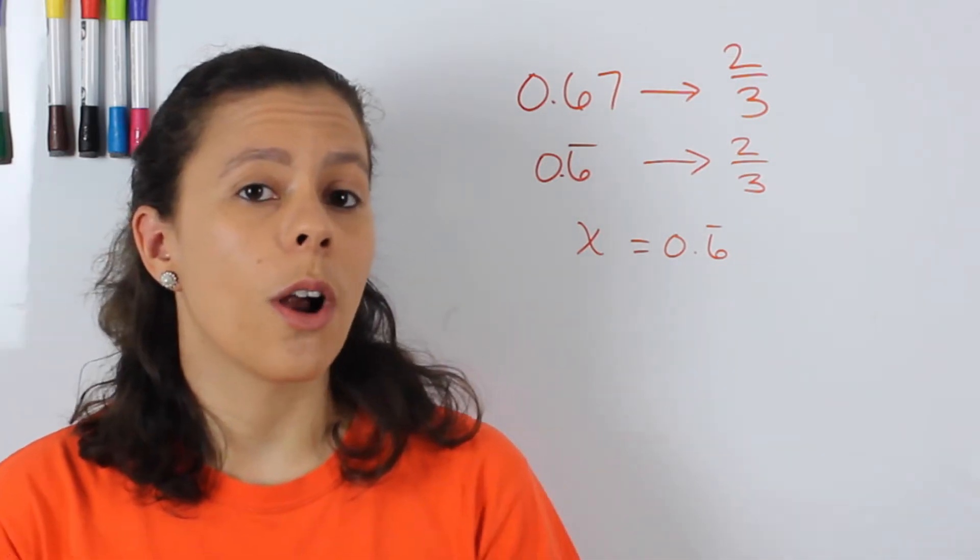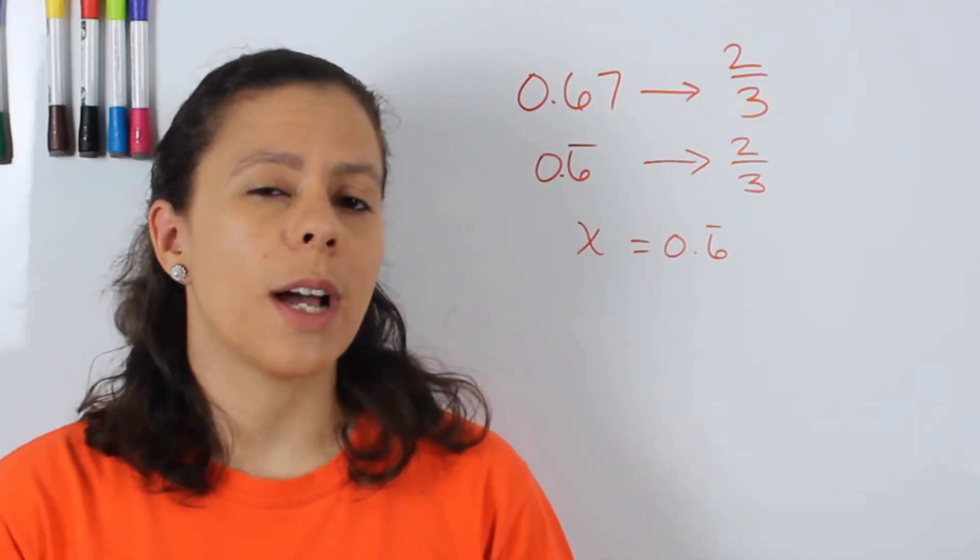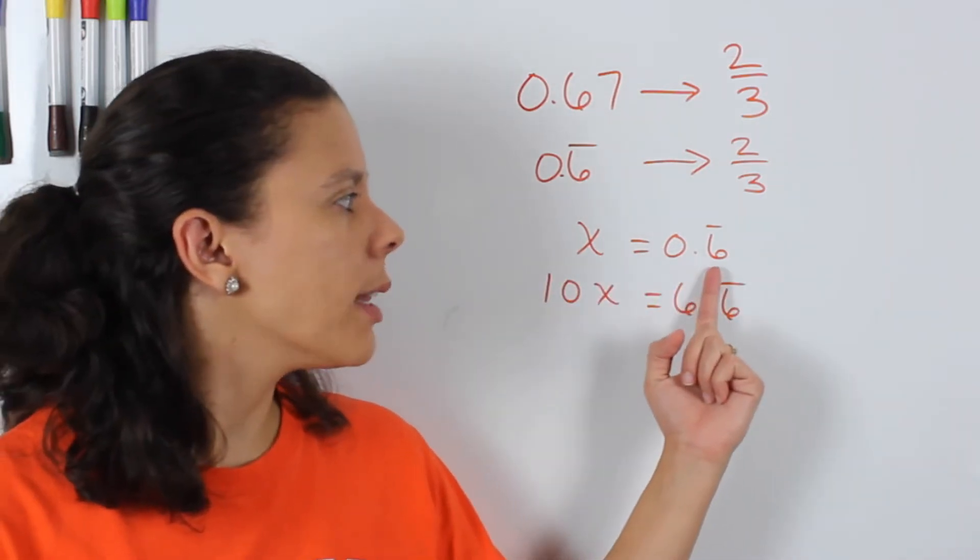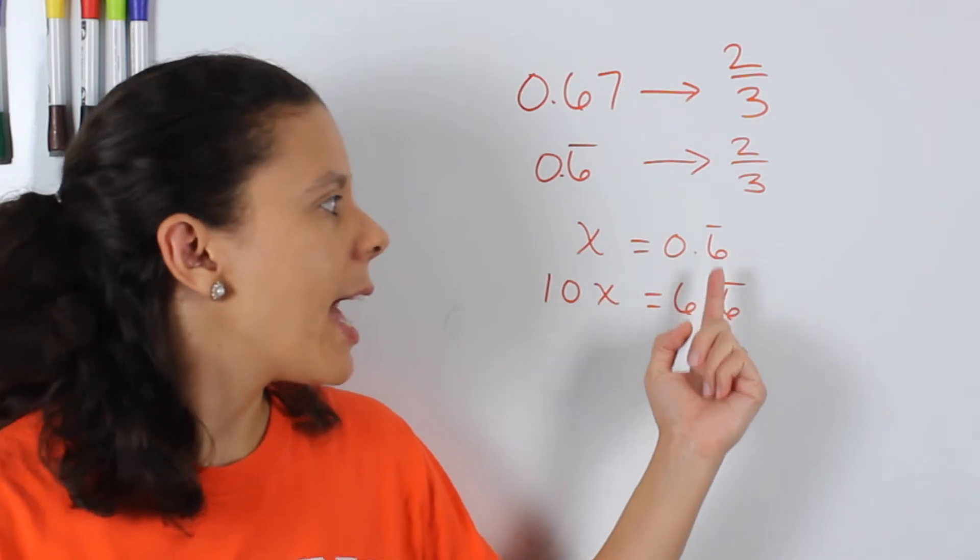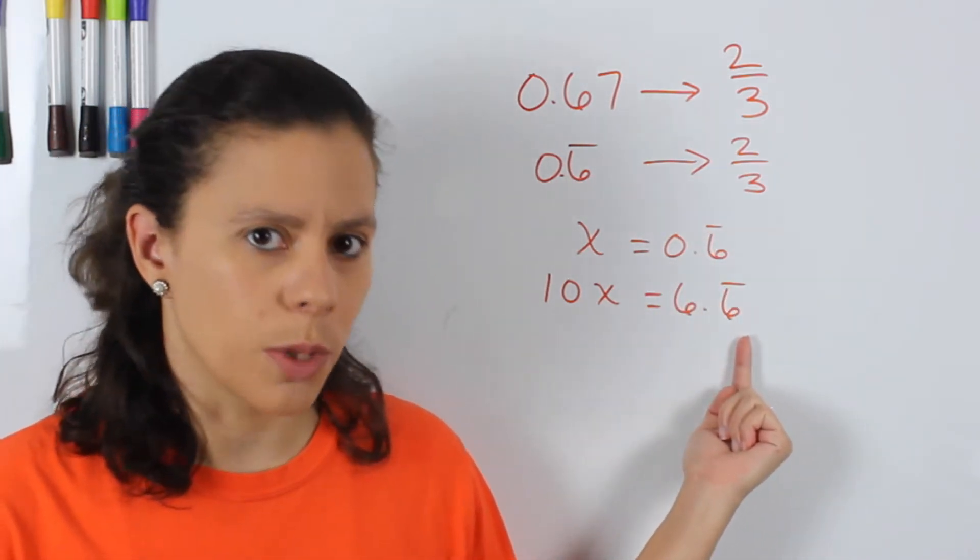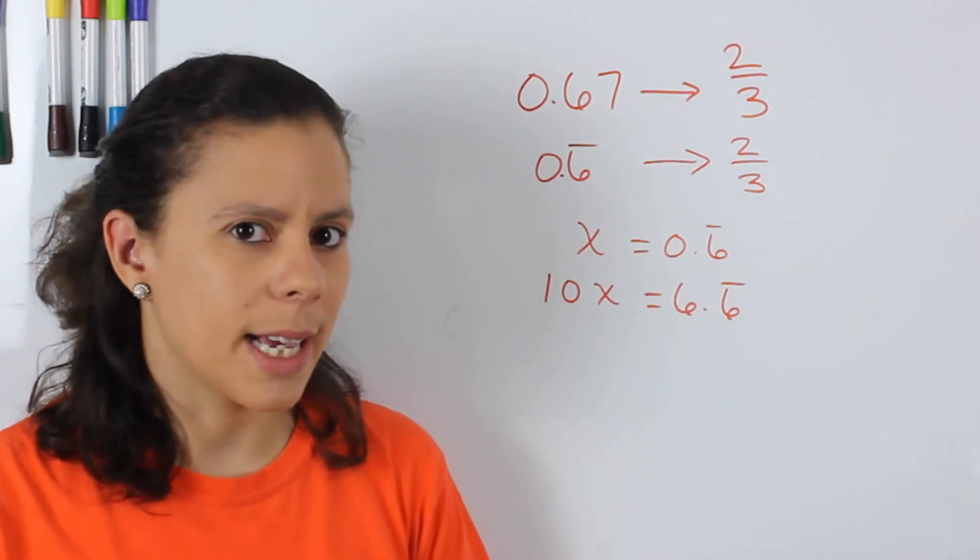Now in order to solve for x, what we have to do is we have to multiply by 10. Why? Because in 0.6 repeating, there's only one decimal place that we want to get rid of. And if we multiply by 10, what we get is 6.6 repeating. I hope that makes sense.